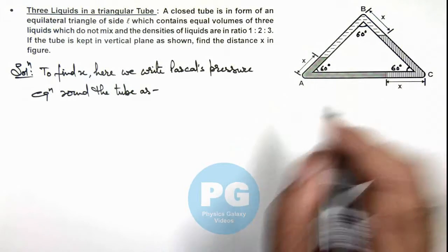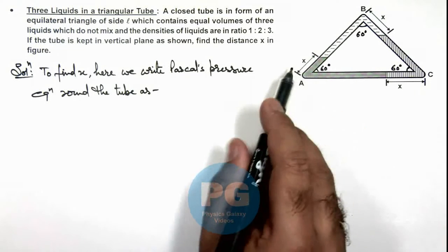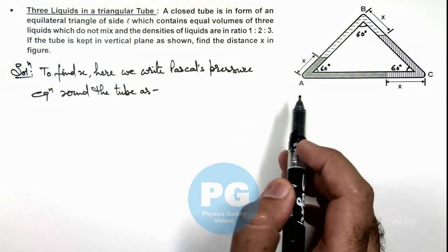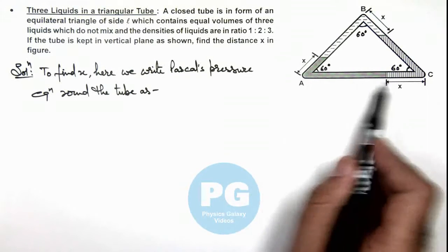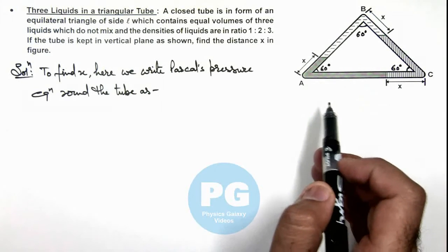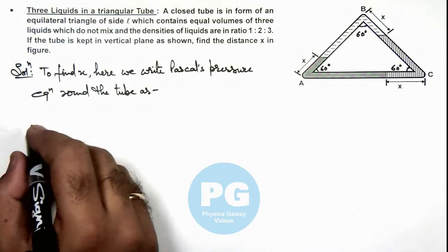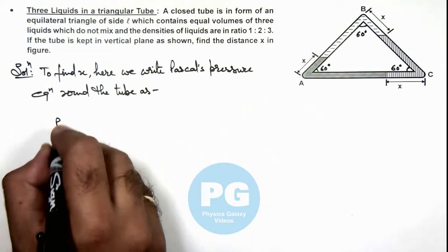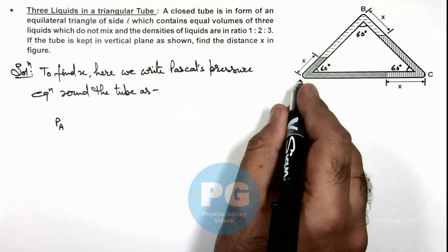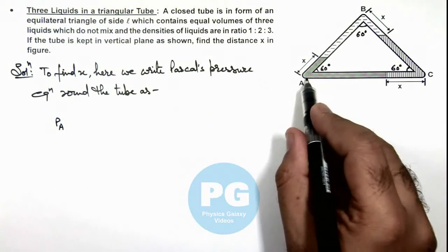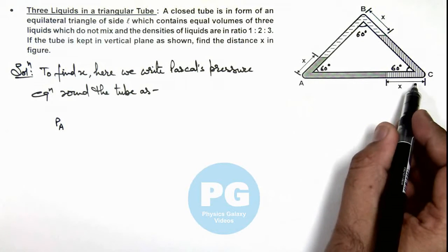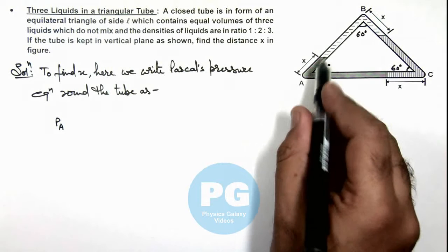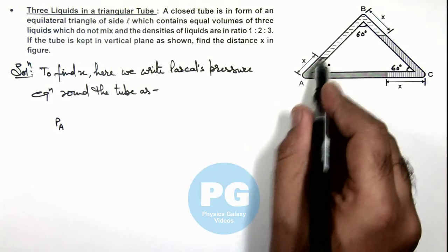So all vertical distances we can measure in terms of x. If the total length of the tube is l, this can be taken as l minus x. We can write: if we start from point A, pressure at A is considered as P_A. Throughout the horizontal length of the tube, pressure will remain constant, so if we calculate the pressure at this point...